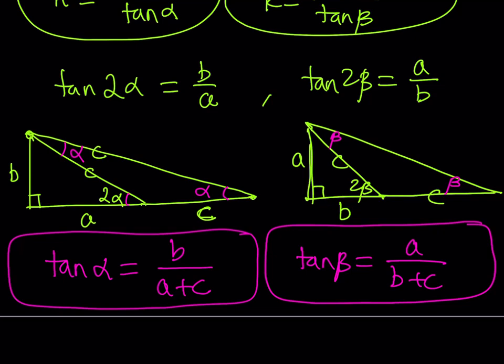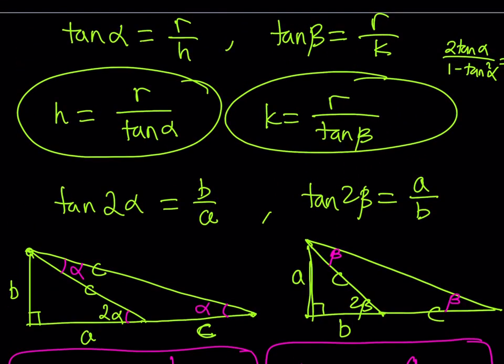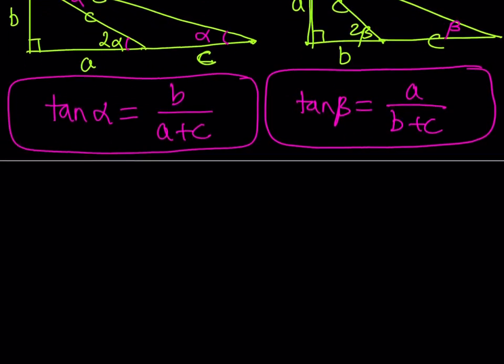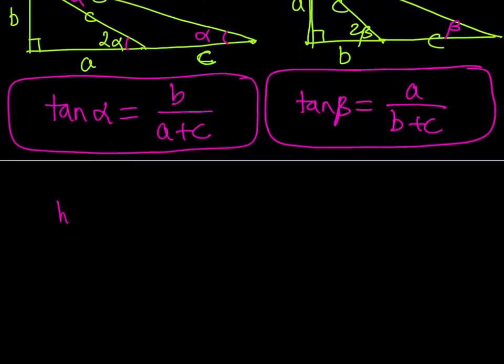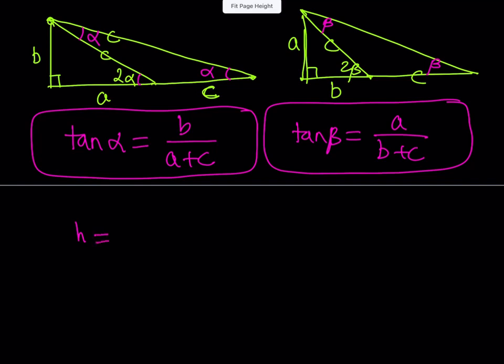So, I got tangent alpha and tangent beta. What am I going to do with those? I'm going to go back here and substitute those. Isn't that awesome? Yes, I think it's awesome. Now, so let's go ahead and do that. And we're going to be writing. So, this allows us to write h in terms of a, b, c, and r, which is cool. So, remember, h was equal to r over tangent alpha.